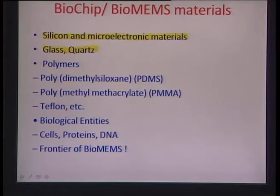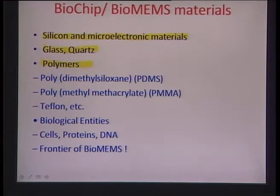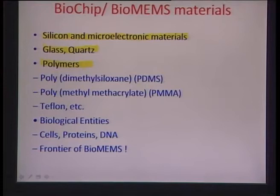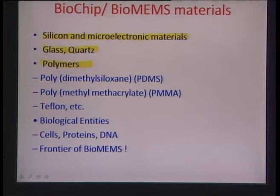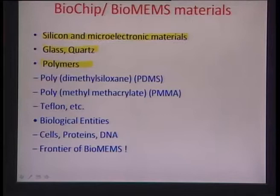Alternate materials include polymers. Because we are talking about biological entities that tend to be happy in fluidic environments and in the presence of carbonaceous materials, and polymers being carbon-rich materials, the emphasis is slowly shifting from silicon-based to polymer-based processes. One important polymer is the silicone rubber polydimethylsiloxane (PDMS), used for replication and molding.